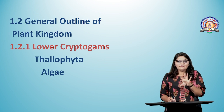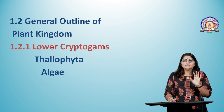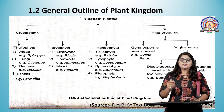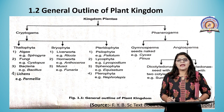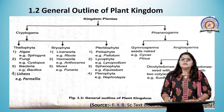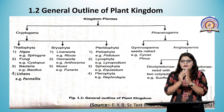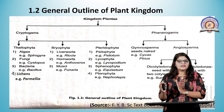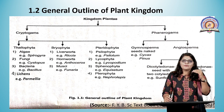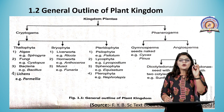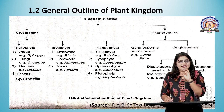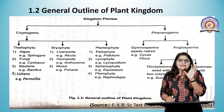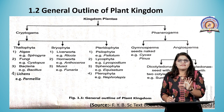Looking at the general outline of plant kingdom classification: Kingdom Plantae is divided into two groups — Cryptogames and Phanerogames. The lower cryptogames are the Thallophyta, which include algae, fungi, and lichen. Cryptogames are plants that do not bear flowers and seeds.